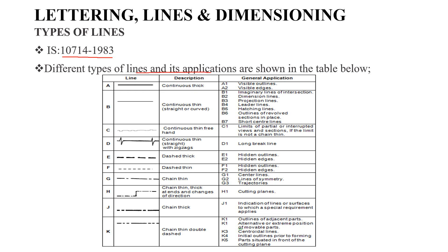The first type is continuous thick lines. These are used for visible outlines and edges.